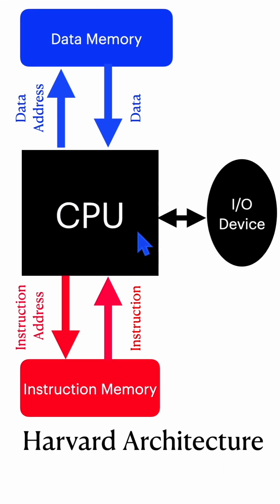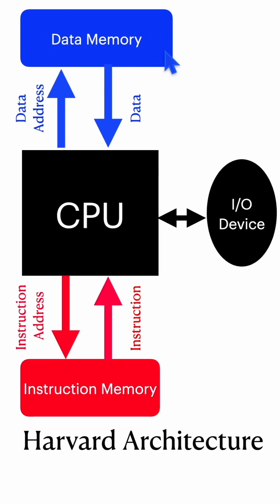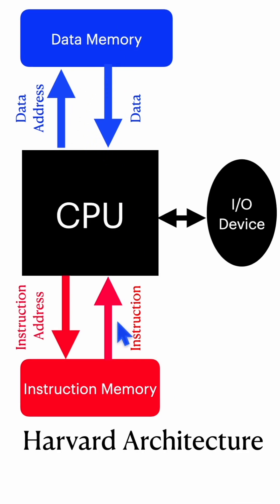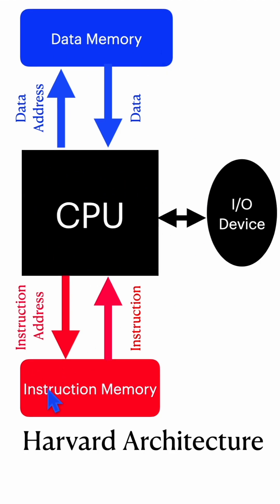In Harvard architecture, the CPU can interact with input-output devices, and your data can be stored in data memory while instructions are stored in a separate instruction memory. Separate buses are given to both so that the CPU can access data memory as well as instruction memory at the same time.